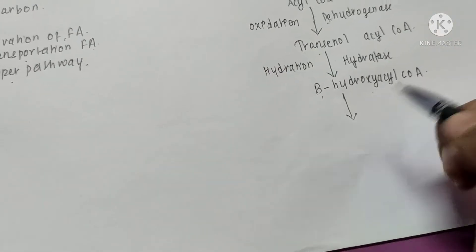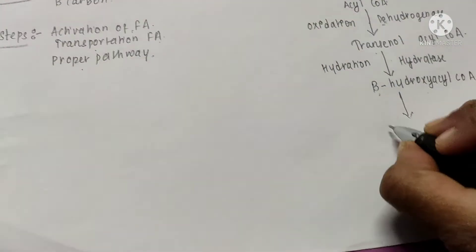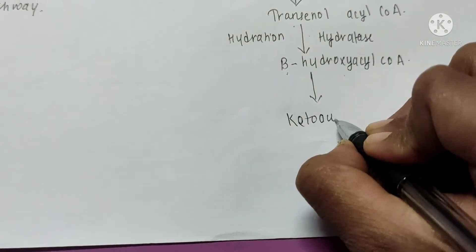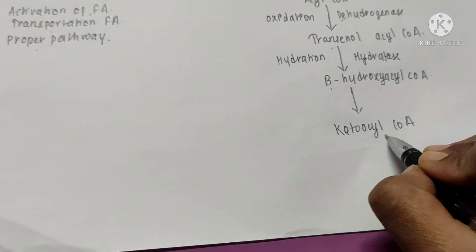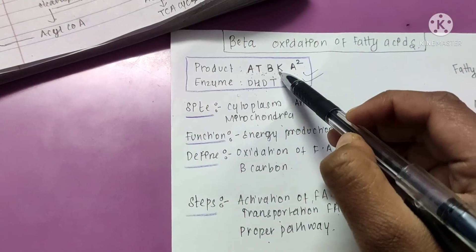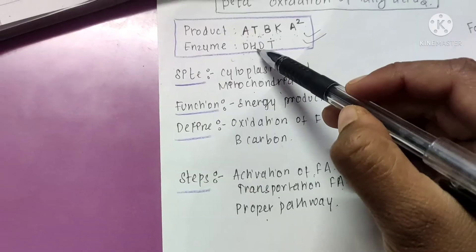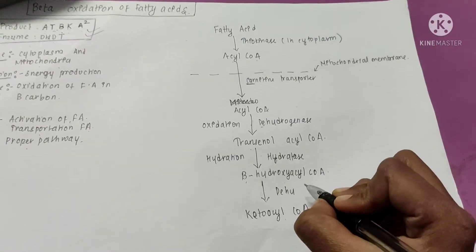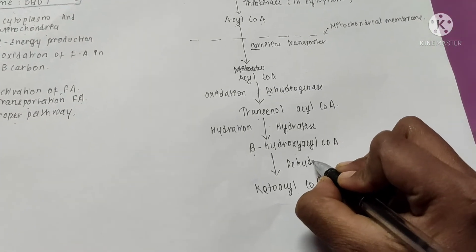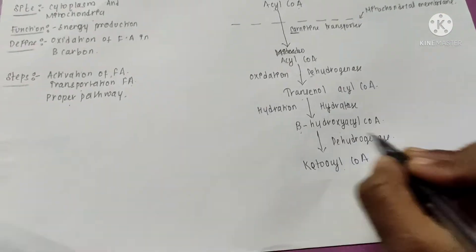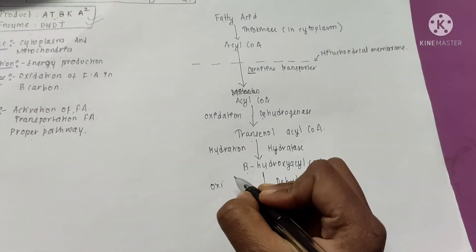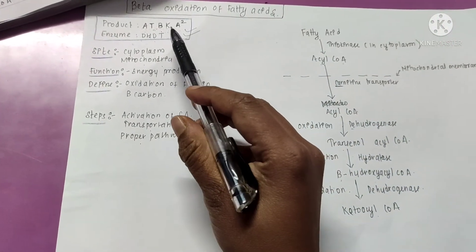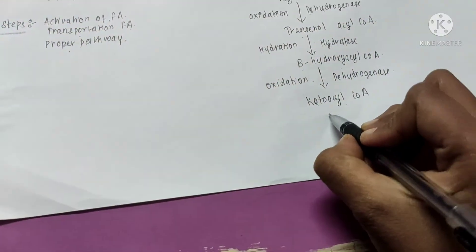Next is product K — keto acyl CoA. The enzyme again comes from D in our mnemonic, which is dehydrogenase. This process is again oxidation, where dehydrogenase acts on hydroxy acyl CoA to form keto acyl CoA.